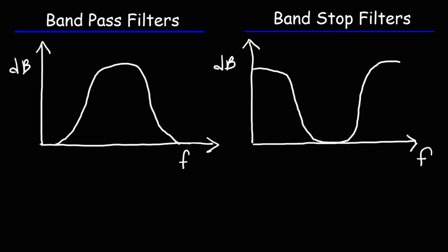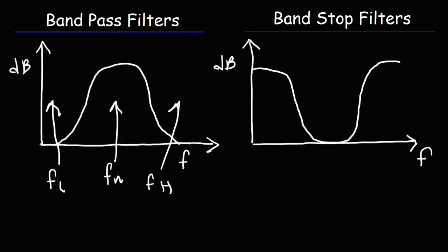In this video, we're going to talk about bandpass filters and bandstop filters. Bandpass filters pass a band of frequencies — they block low-level frequencies and also high-level frequencies. But mid-level frequencies, defined within a certain range, they allow through the circuit. All the low-level frequencies and high-level frequencies get filtered out.